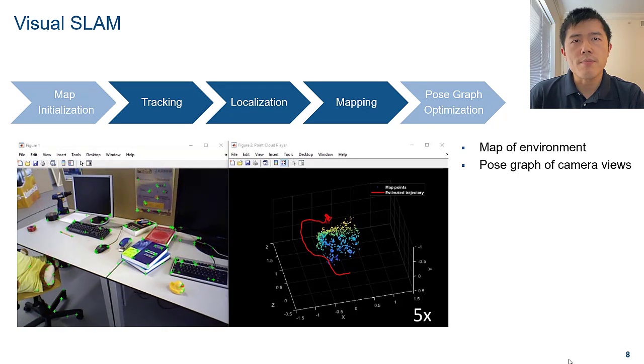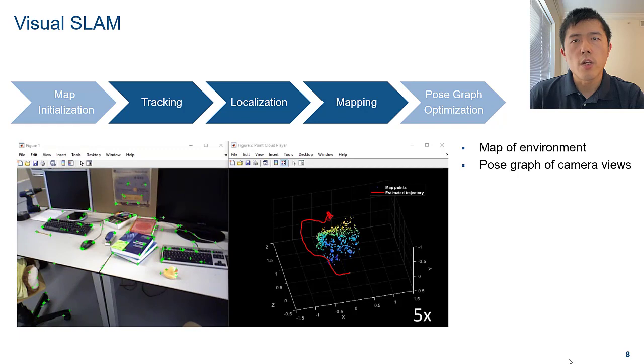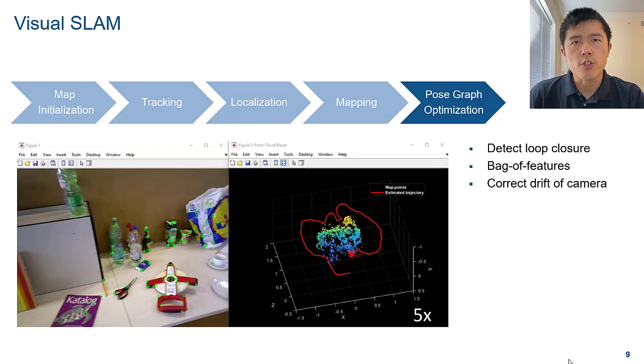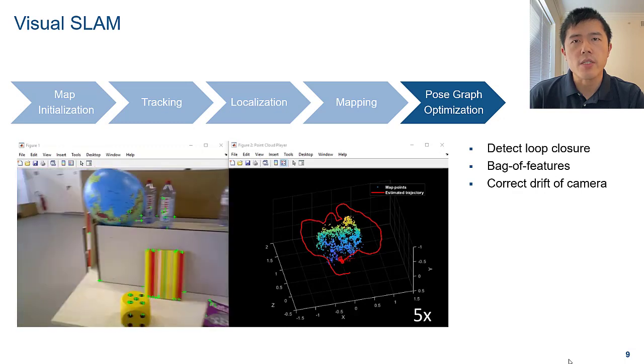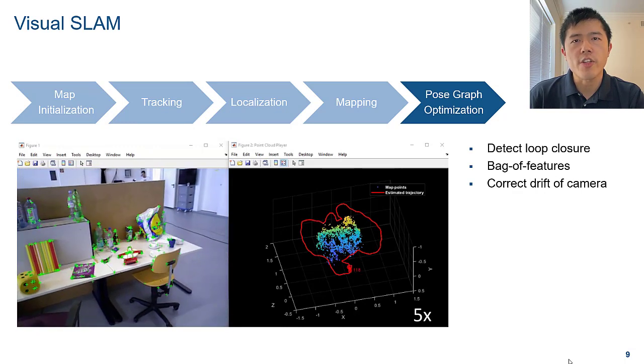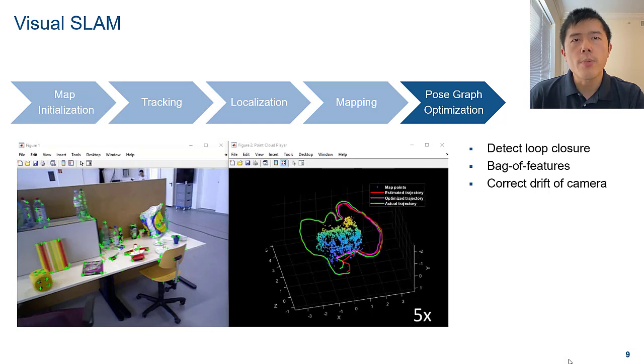The Visual SLAM pipeline terminates when loop closure is detected. That is, the camera returns to a place that has been visited before. Once we find the loop closure using the bag of features approach, we can optimize the pose graph to get a camera trajectory that is closer to the ground truth.